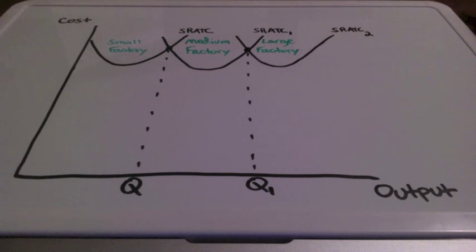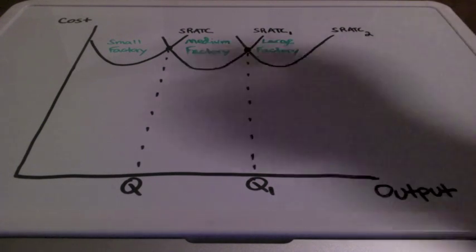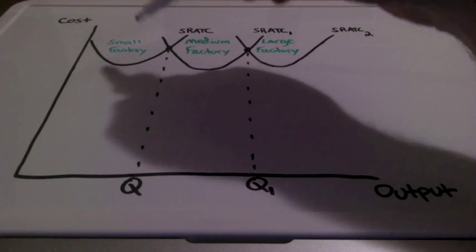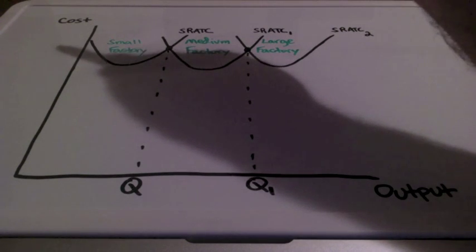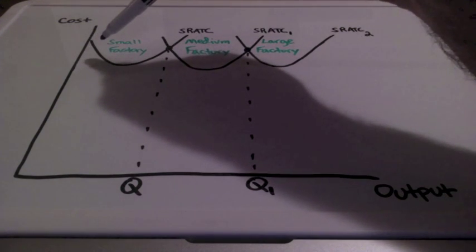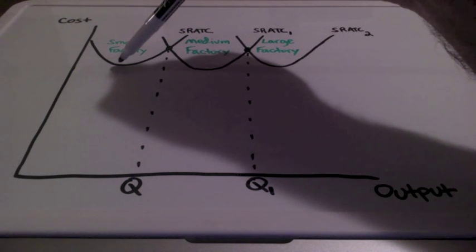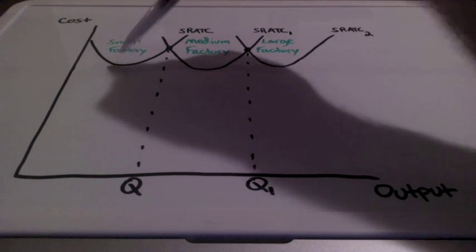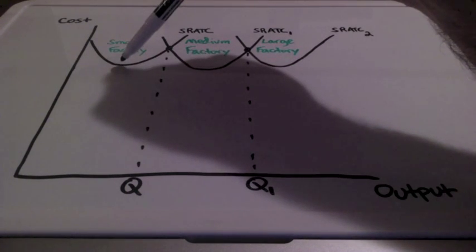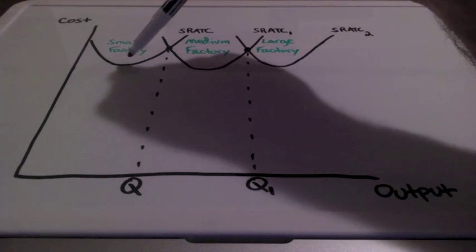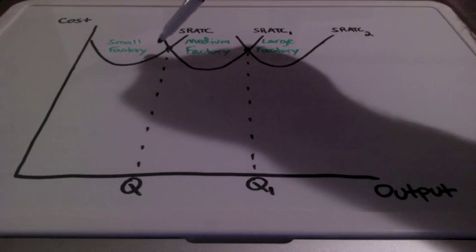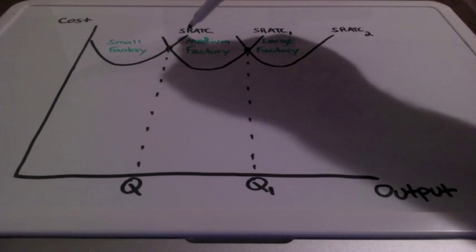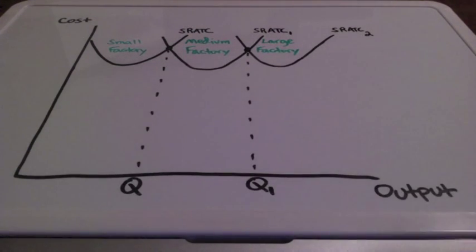Let's say that you want to start a business and you want to start off modestly small with a small size factory. When our units are cheap, our costs will be low and our productivity will be high. But once we cross the minimum point of this short-run average total cost curve, as additional output is less, our costs will continue to rise, demonstrating the concept of diminishing marginal returns.